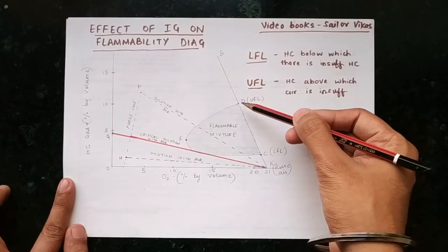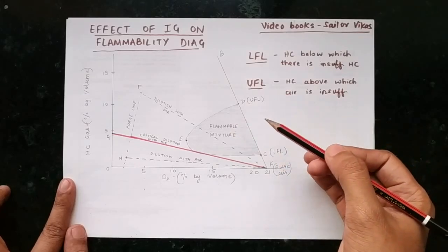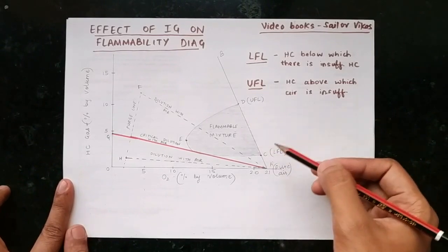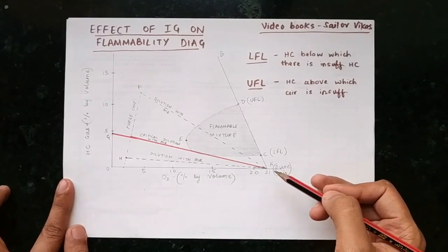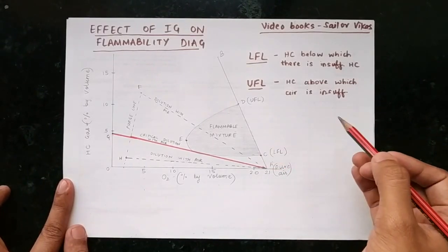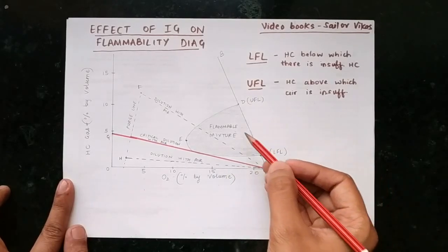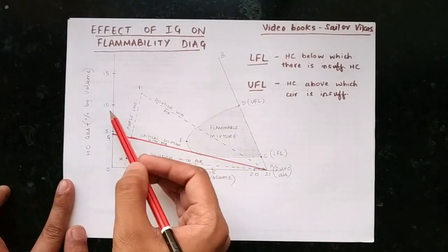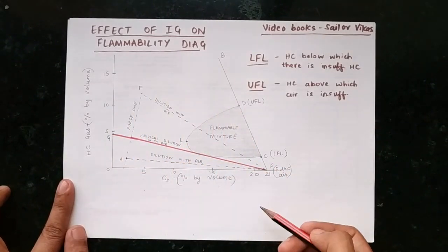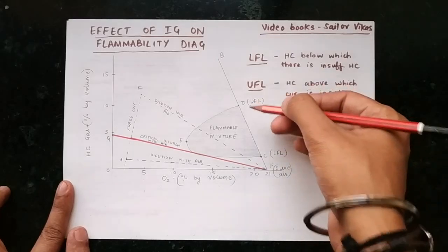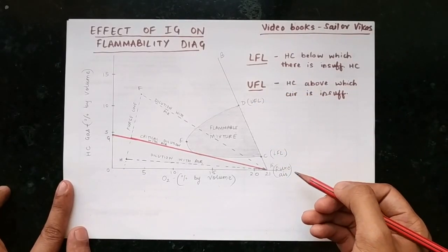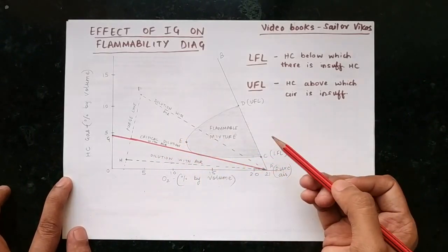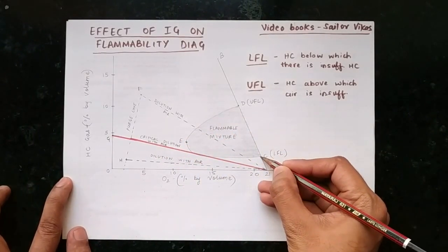This diagram represents the tank's atmosphere. The lower flammable limit and upper flammable limit will change for all different types of petroleum liquids. In the tanker safety guide, various MSDS are given for many types of petroleum liquids, and for each one the LFL and UFL will be different. In general terms, the LFL is approximately 2% by volume and the UFL is approximately 10% by volume.